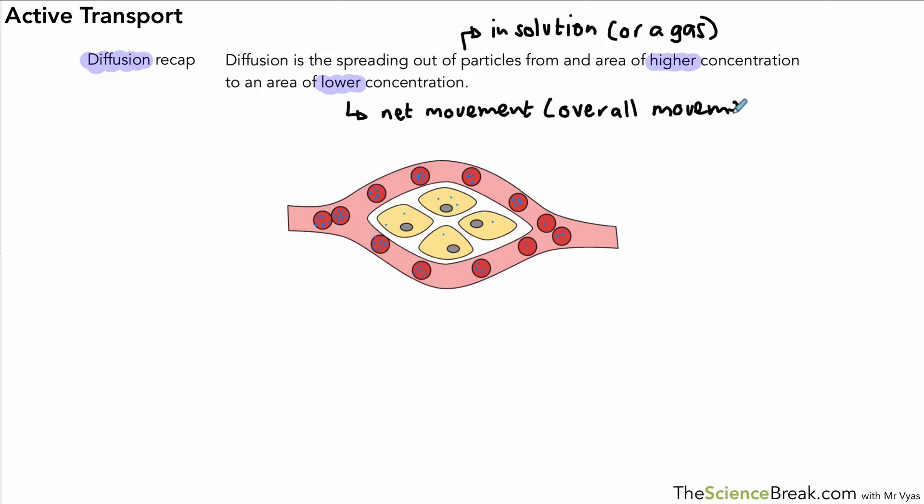So during diffusion particles can move in both directions but they have an overall movement towards the lower concentration, and that was our idea of diffusion. One example that we gave for diffusion was that of oxygen diffusing into cells from blood vessels called capillaries. We had red blood cells that contained high concentrations of oxygen because they had just come from the lungs, so we've got oxygen in higher concentration than in the cells and therefore the oxygen moved into the cells by diffusion.